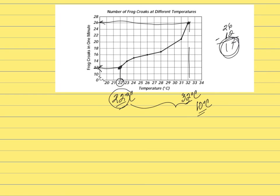One more time: if the independent variable is given and you want to find the dependent variable, you go up all the way through the line, then move all the way to the left, and look for that value. But on the contrary, if the dependent variable is given, you move all the way to the right until you meet the line, and then go down to find the value of the independent variable.